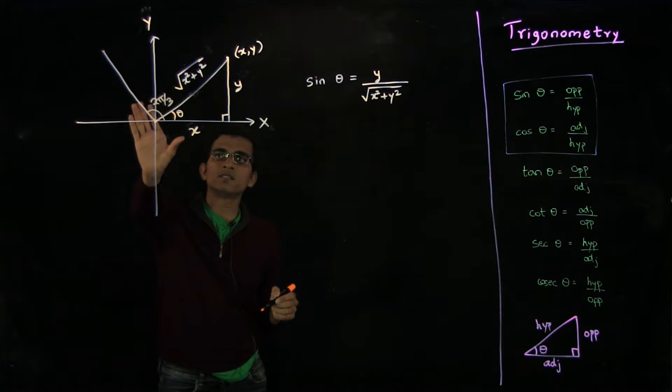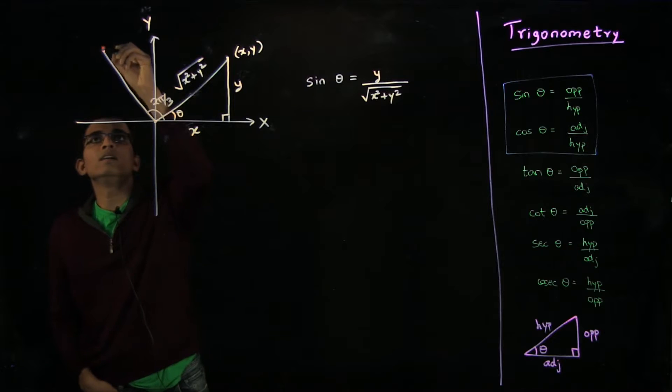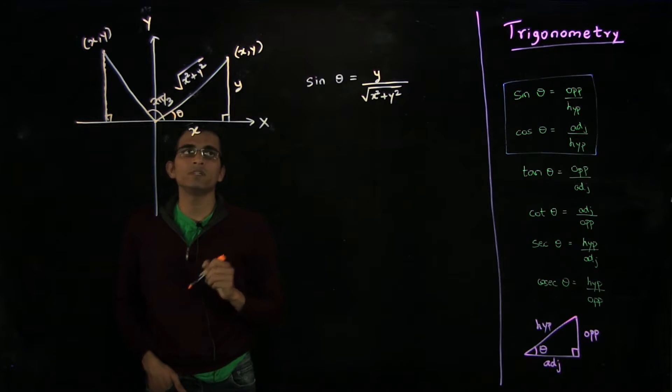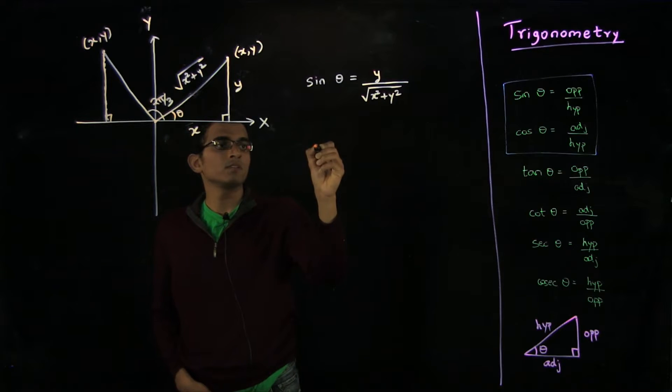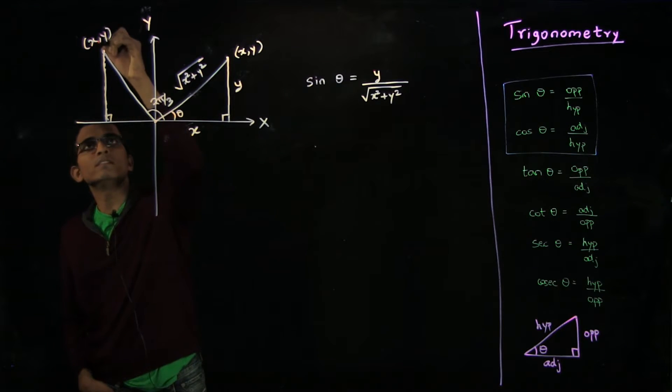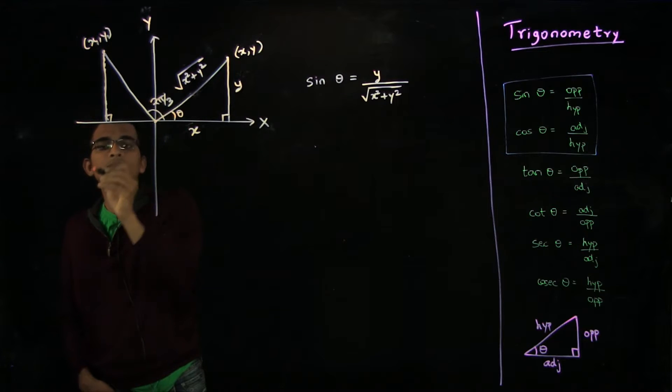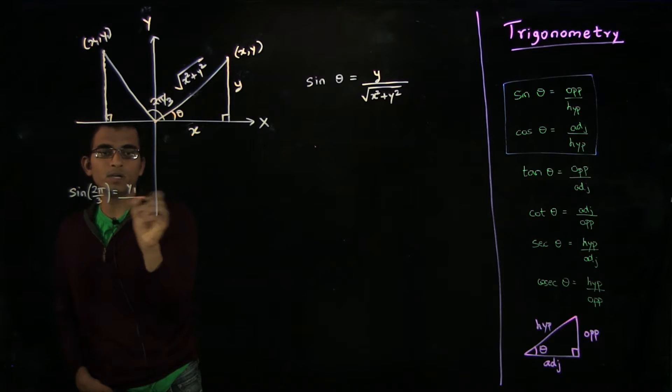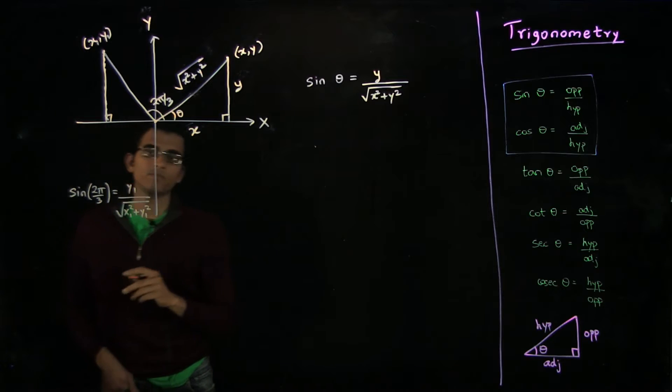It is an angle which is larger than π/2, and let's say it is indexed by the coordinates (x,y). Then the sine of this angle - let's say this is x₁ and y₁ - we will still have that the sine of this angle 2π/3 is given by y₁ divided by √(x₁² + y₁²).